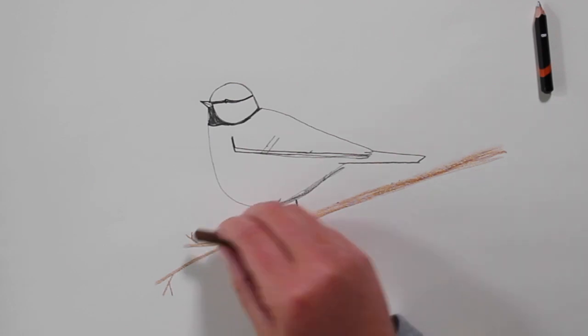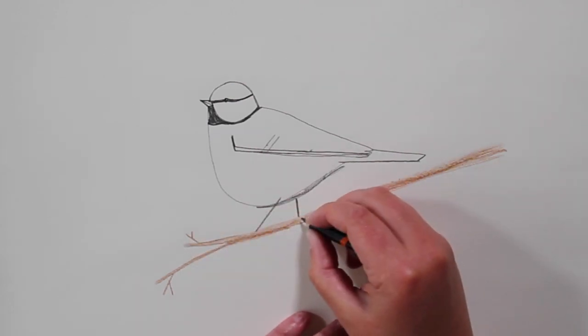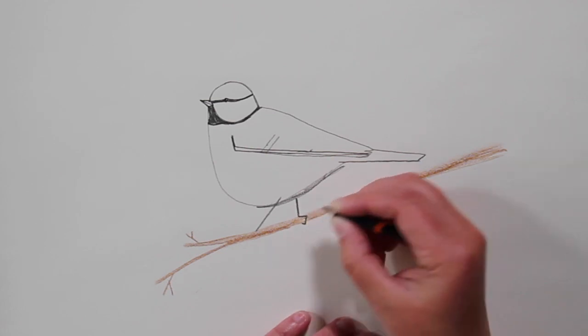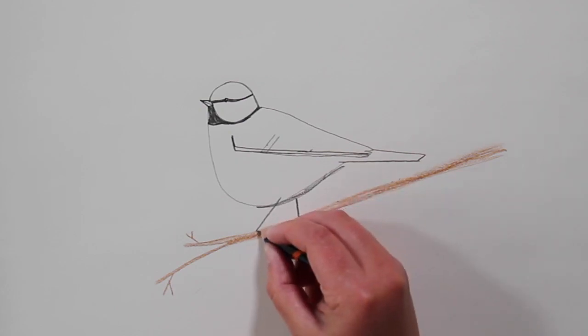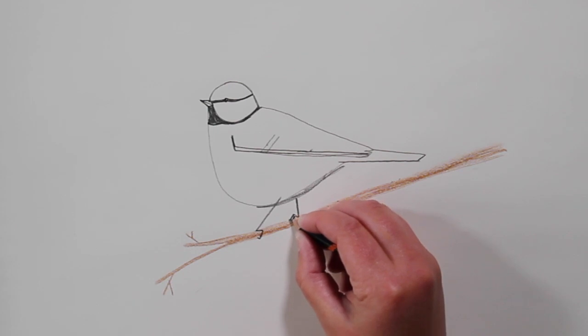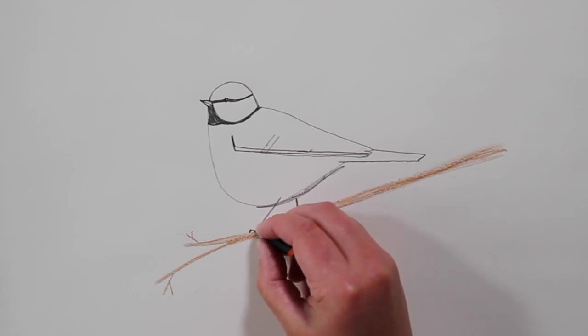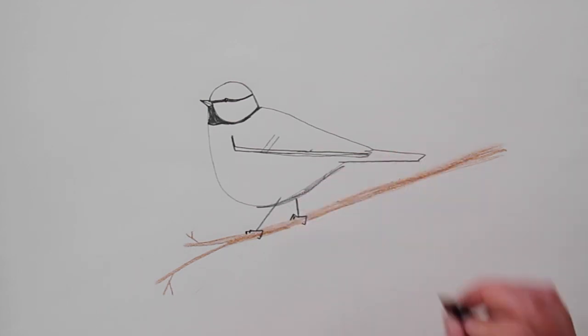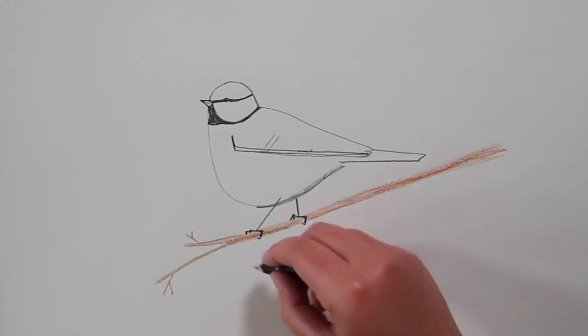So we're going to put in his feet clinging to the branch. So that's his back toe. And then just some little marks like this of the front toes disappearing around the front of the branch like that. And if you want to spend a bit more time on that, then just pause the video and come back to it once you've done those bits.